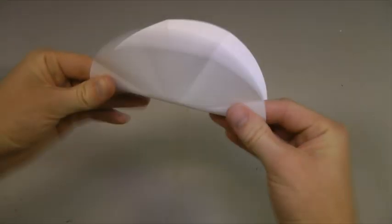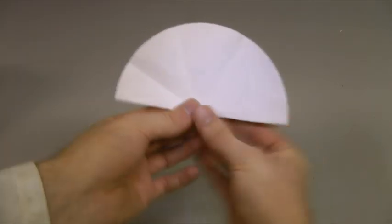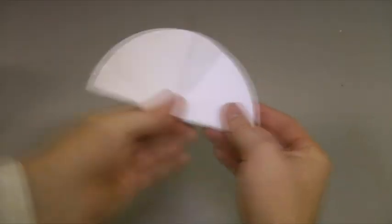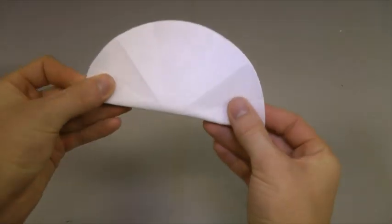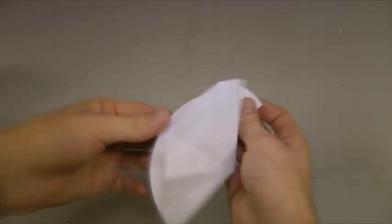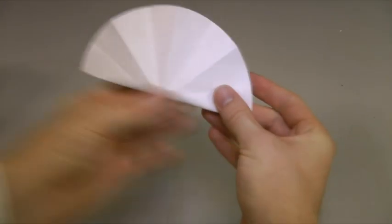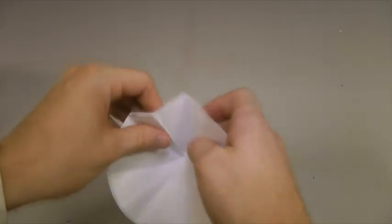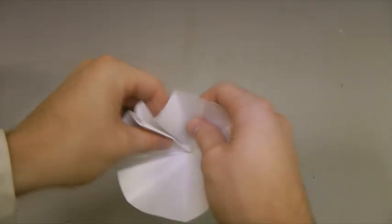You now need to turn the filter paper over and add four folds between the folds you've already made. Your filter paper should now be folded into 16 segments, with each alternating fold being in the opposite direction.